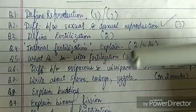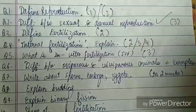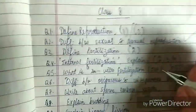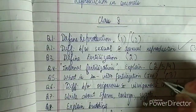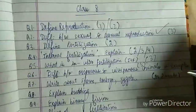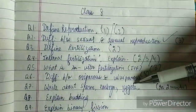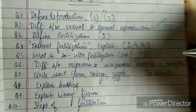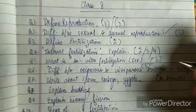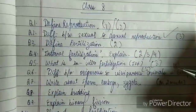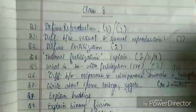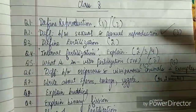The difference between oviparous and viviparous animals is important for three marks, but a combined question can also be asked — write the examples as well — so it can be asked for five marks combined. Examples are really important and can also be asked for one mark.